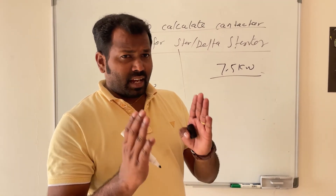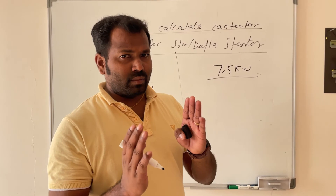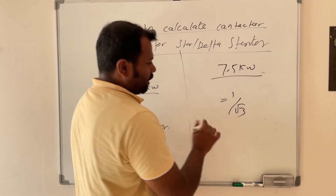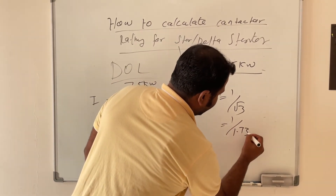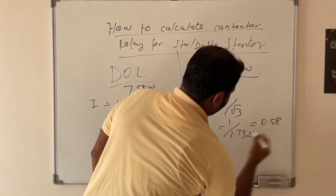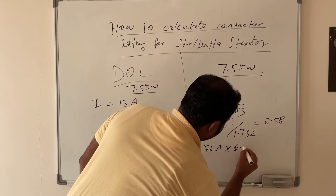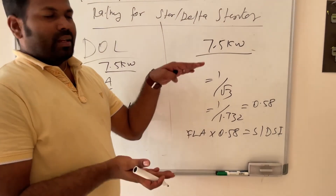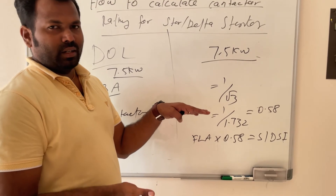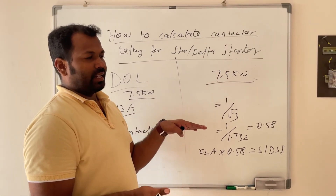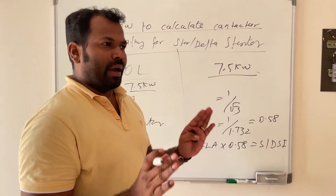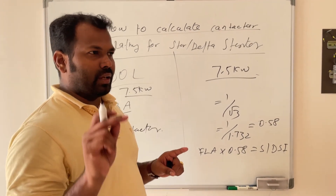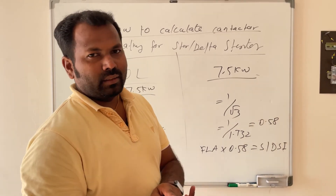It is very clear that for a star-delta starter, the current will be one divided by root three times the full load current. One divided by 1.732 equals 0.58. That means full load current multiplied by 0.58 equals the star-delta starter current. Just keep 0.58 in mind — it means one by root three. So: full load current × 0.58 = star-delta starter contactor rating.